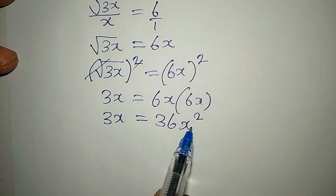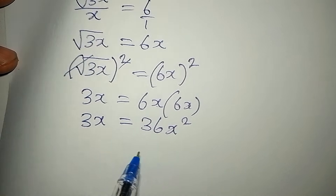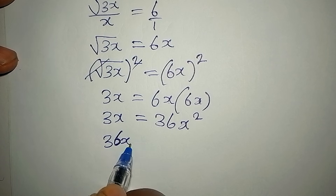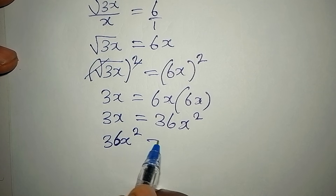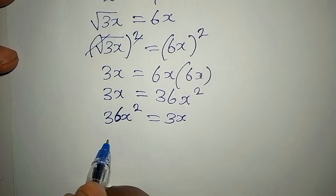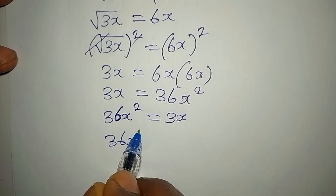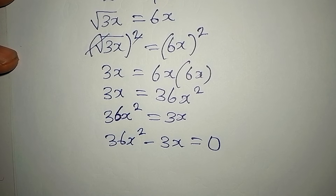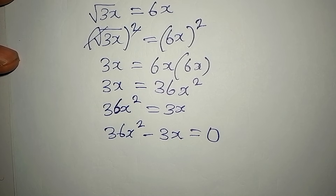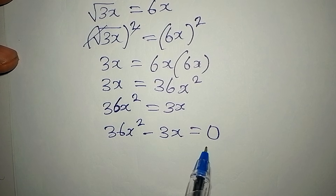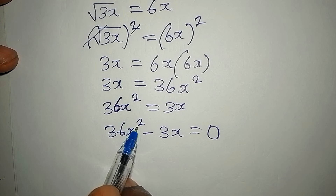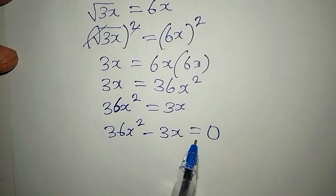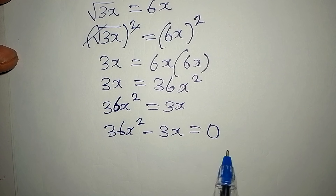Remember the term with the highest power is written first, so we write 36x squared equals 3x, which gives us 36x squared minus 3x equals 0. This is a quadratic equation because of the power of 2, the presence of variable x, and the equal sign.